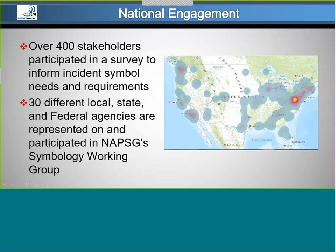Just a little bit of background on NAPSIG's incident symbology efforts, to give you an idea of where the symbols came from. We've had a number of different surveys, and we have a pretty active symbology working group comprised of over 30 different stakeholders from different local, state, and federal agencies, with primary representation at the local level. Over the past year, we've released surveys to the nation and all stakeholders to get their input, and we've taken well over 400 different stakeholder inputs. The symbols you see represent a pretty common approach and a common language that is reflective nationwide.